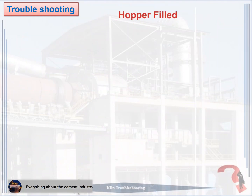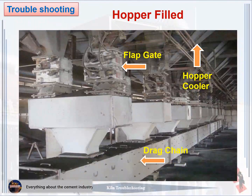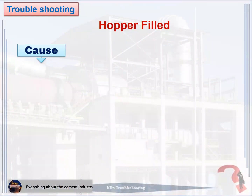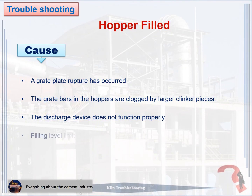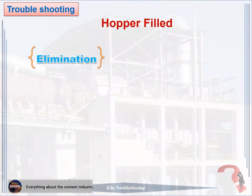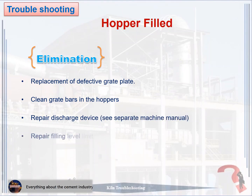Problem 9: Hopper filled. The causes: one, a grate plate rupture has occurred; two, grate bars in the hoppers are clogged by larger clinker pieces; three, the discharge device does not function properly; four, filling level limit switch not working properly. How to eliminate: one, replacement of defective grate plate; two, clean grate bars in the hoppers; three, repair discharge device — see separate machine manual; four, repair filling level limit switch.